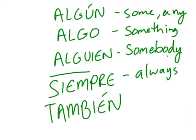So those are our negatives. Let's take another glance at our positives: algún — some; algo — something; alguien — somebody; siempre — always; también — also. We're going to practice these in class. I suggest you take a couple minutes and study these words. Go back, rewind, press play again, watch them again, see if you can remember these words as they're being written.